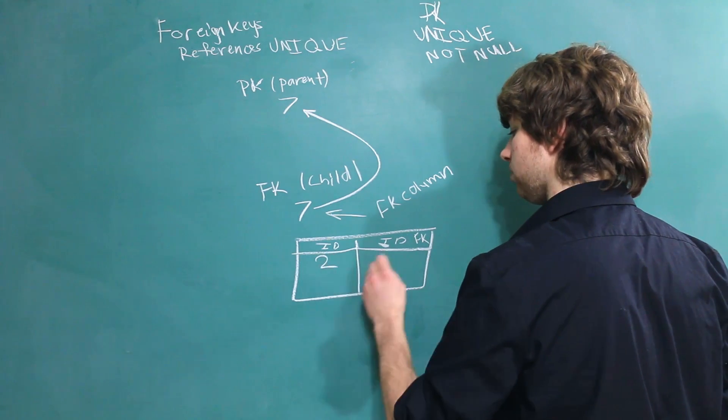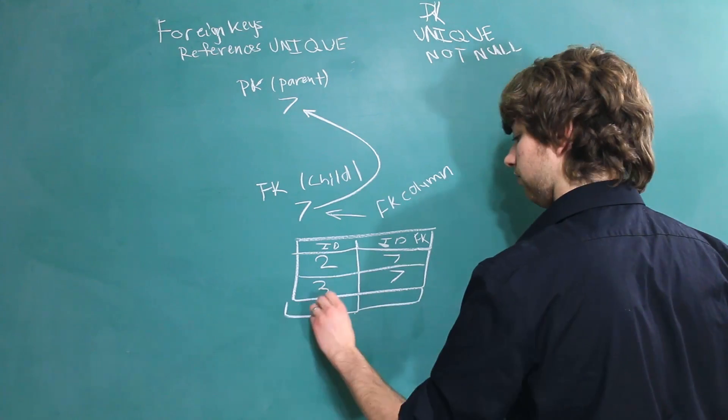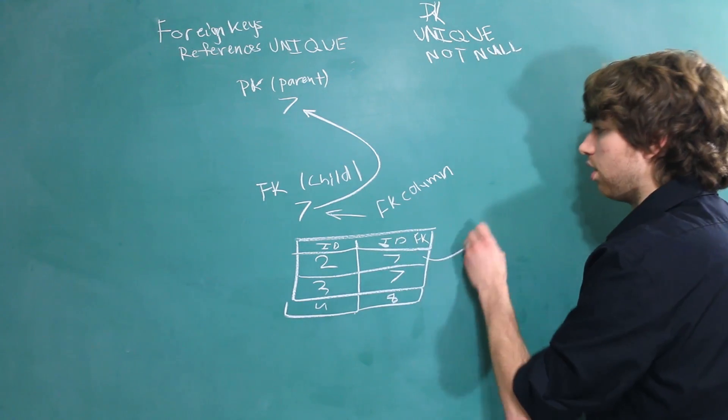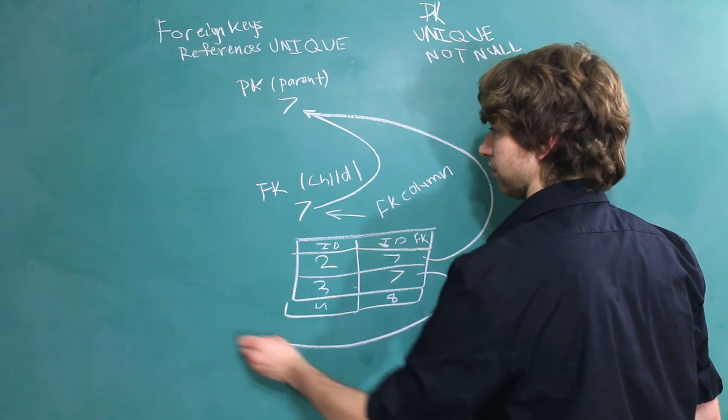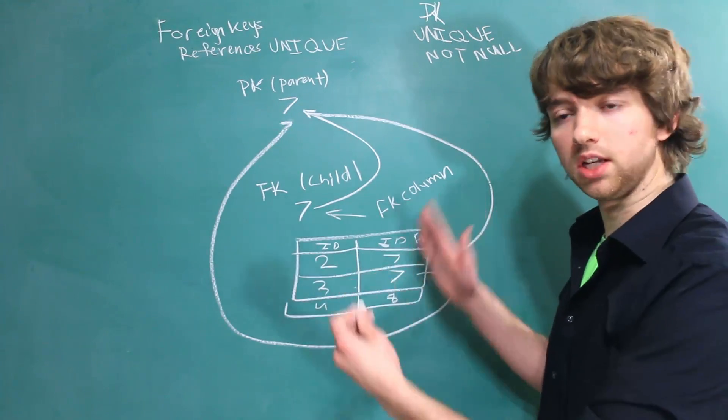So, we could have like 2, 7, for example. We could have 3, 7. We could have 4, 8. This individual row references this parent. So does this row. So, we actually have two rows that reference this parent. So, that's kind of the way this design works. This is how foreign keys work.